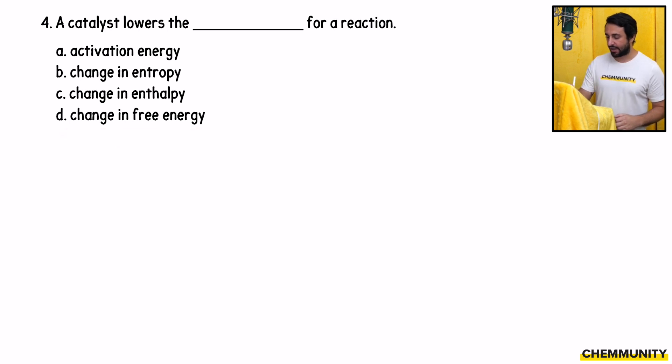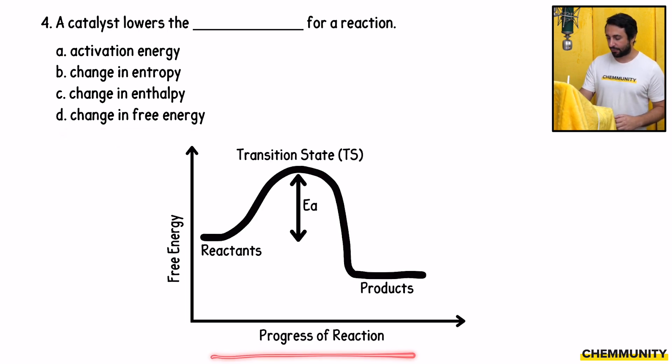If we are looking at an energy diagram, we have reactants, we have products. This is going to be the activation energy. That's the activation energy right there. What a catalyst does, it is going to lower that value. It is going to lower the activation energy. So here's the new activation energy there. So this is going to be A.